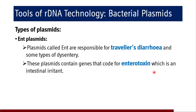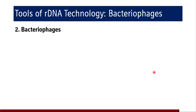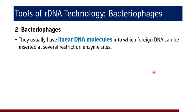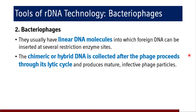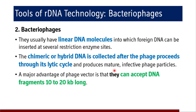Bacteriophages usually have a linear DNA molecule into which foreign DNA can be inserted at several restriction enzyme sites. The chimeric or hybrid DNA is collected after the phage proceeds through its lytic cycle and produces mature, infective phage particles. The major advantage of phage vectors is that they can accept larger molecules than bacterial plasmids — DNA fragments of 10 to 20 kilobase pairs in length.